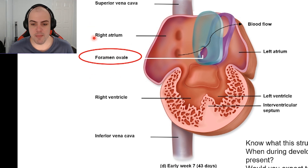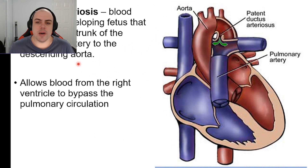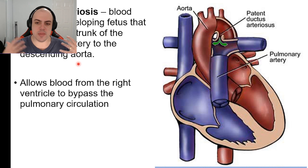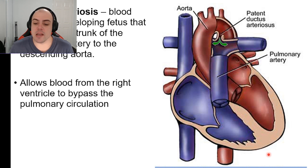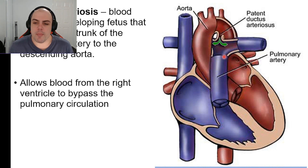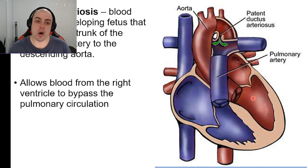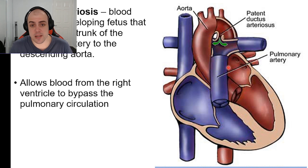The second fetal structure is the ductus arteriosus. During fetal development, we don't want to send blood to the undeveloped lungs. Blood travels from the right atrium to the right ventricle through the pulmonary semilunar valve, but once it reaches the pulmonary trunk, a small duct diverts it straight into the aorta and through the rest of the body. In a fetus, blood is oxygenated not in the lungs but in the placenta.